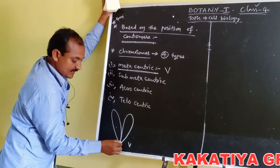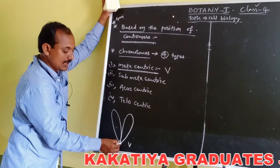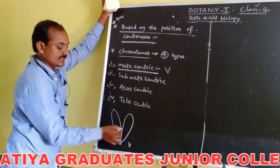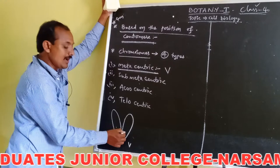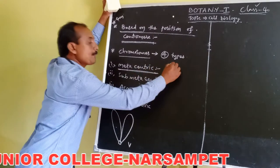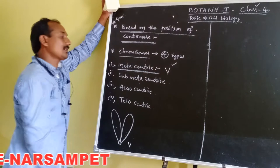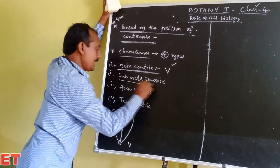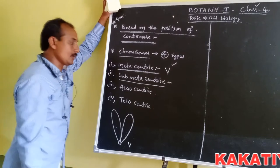Metacentric chromosomes consist of a single centromere located at the center, with two equal arms. During anaphase these chromosomes appear V-shaped. The second type is submetacentric chromosomes.